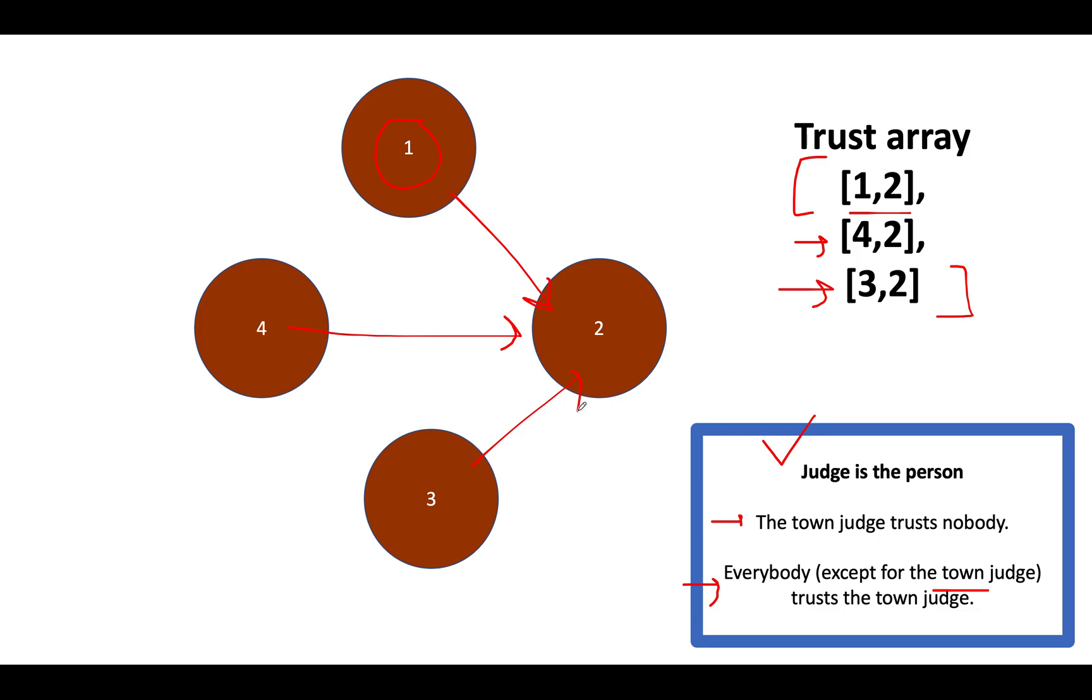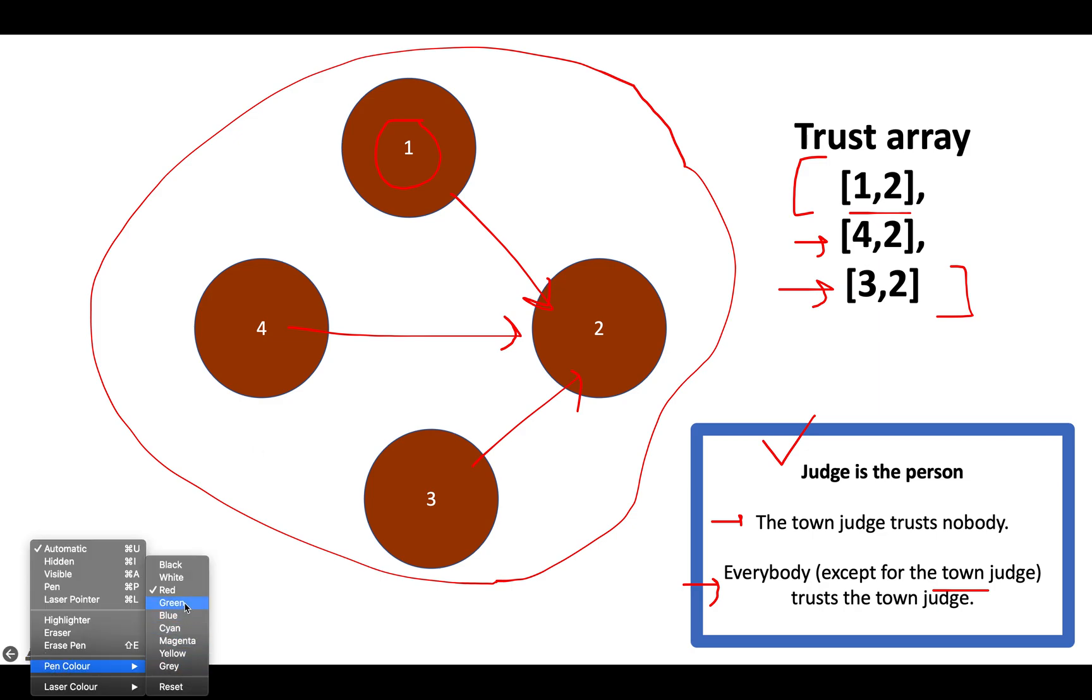Now, if I ask you a question, can you conclude out of this graphical representation, who is the town judge? The answer is yes. Let's carefully visualize each of the node. Let's start with one. One is already trusting any other node. That means, the first condition is violated. As it is stated that the town judge should not trust anyone in the town.